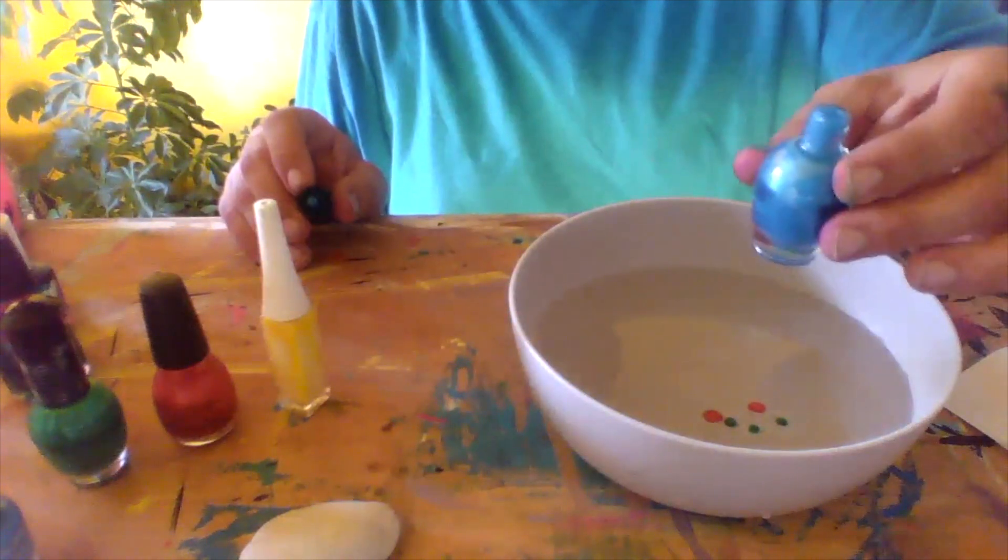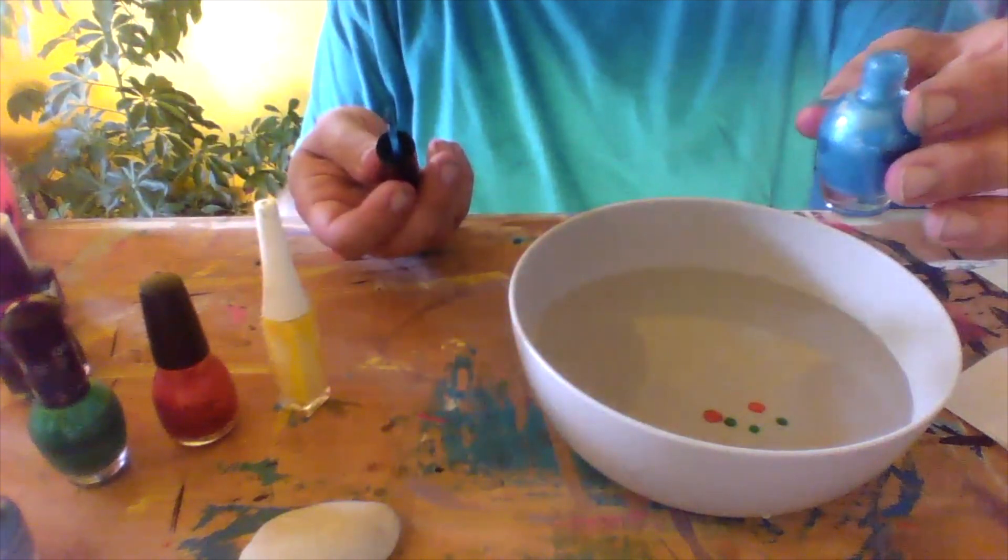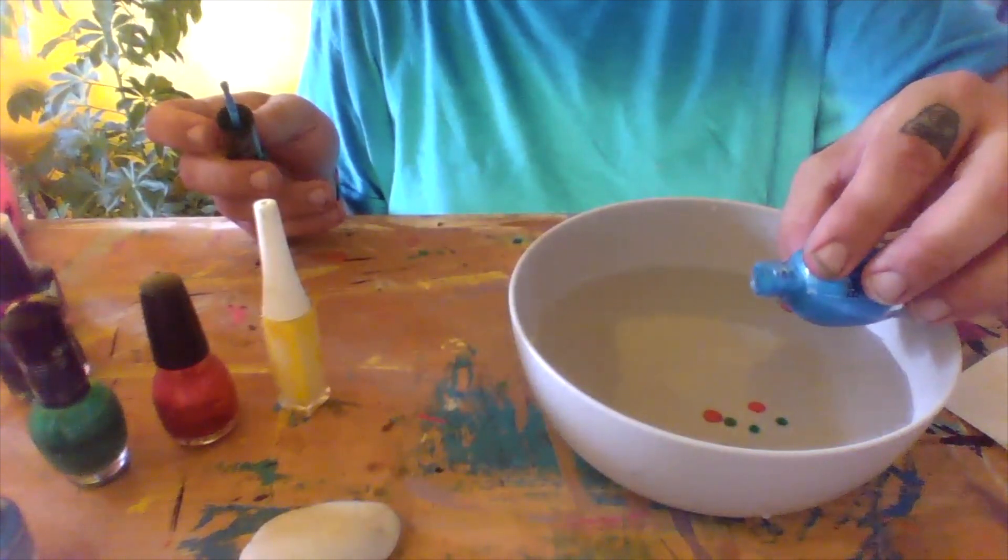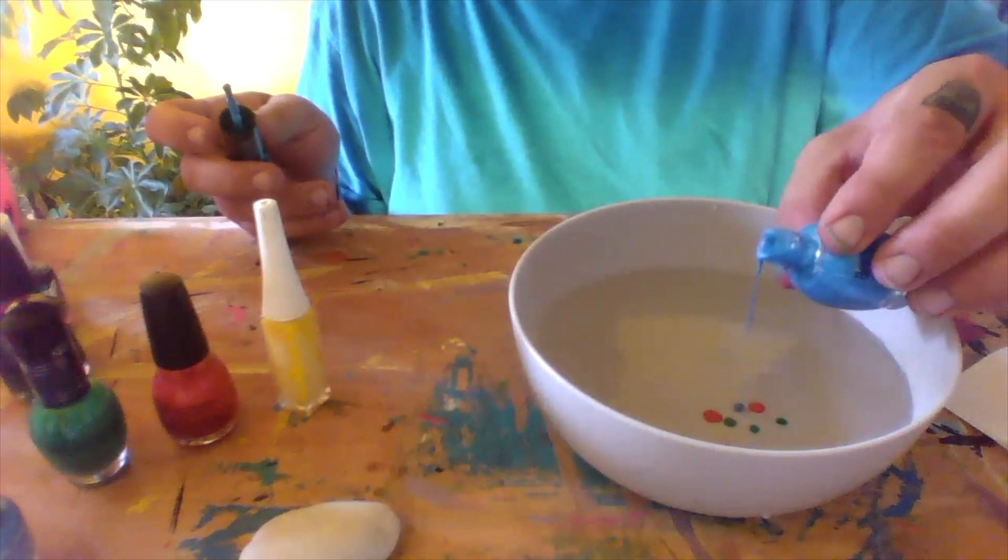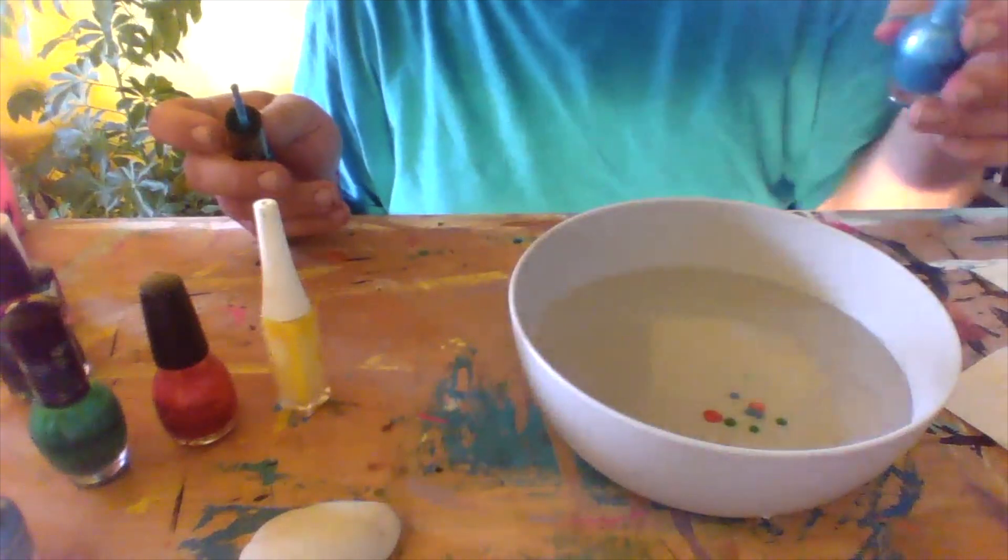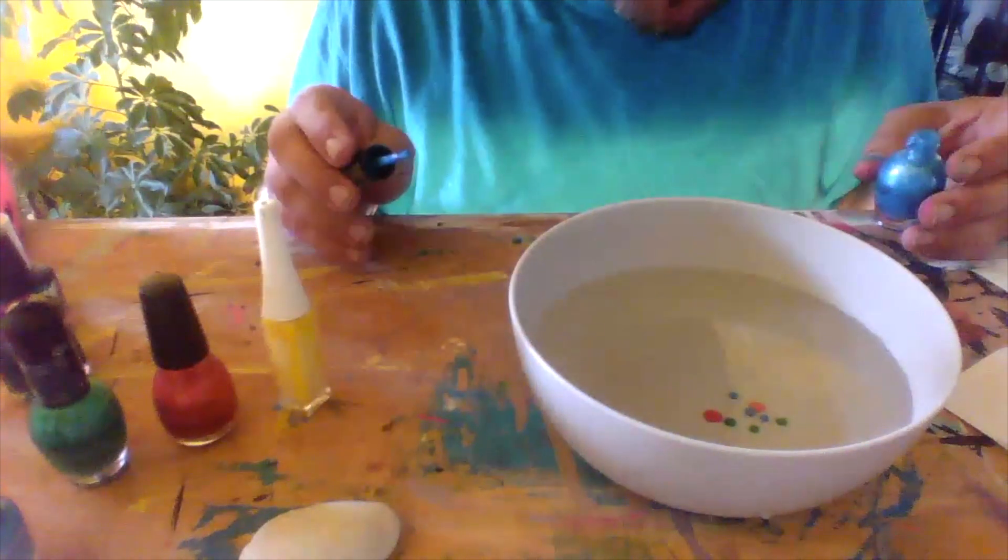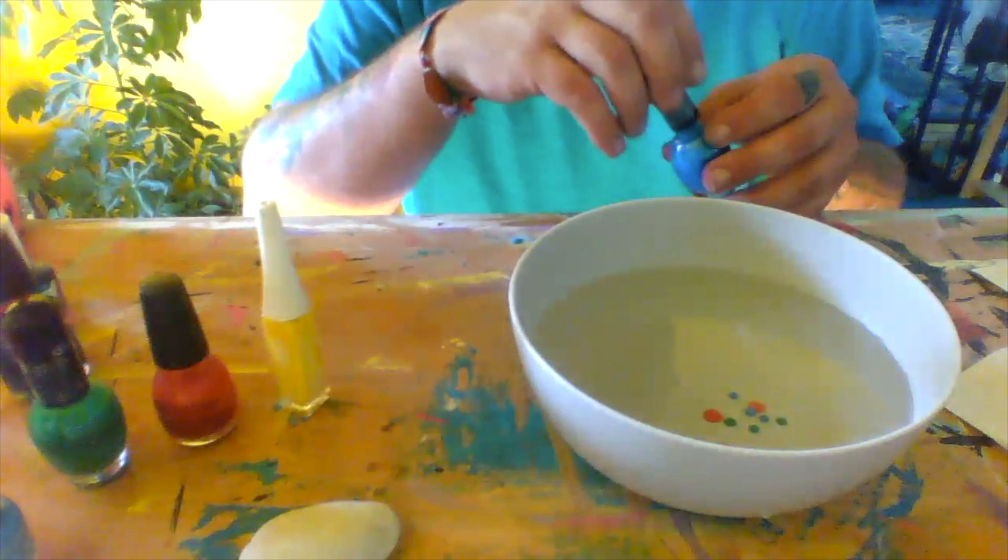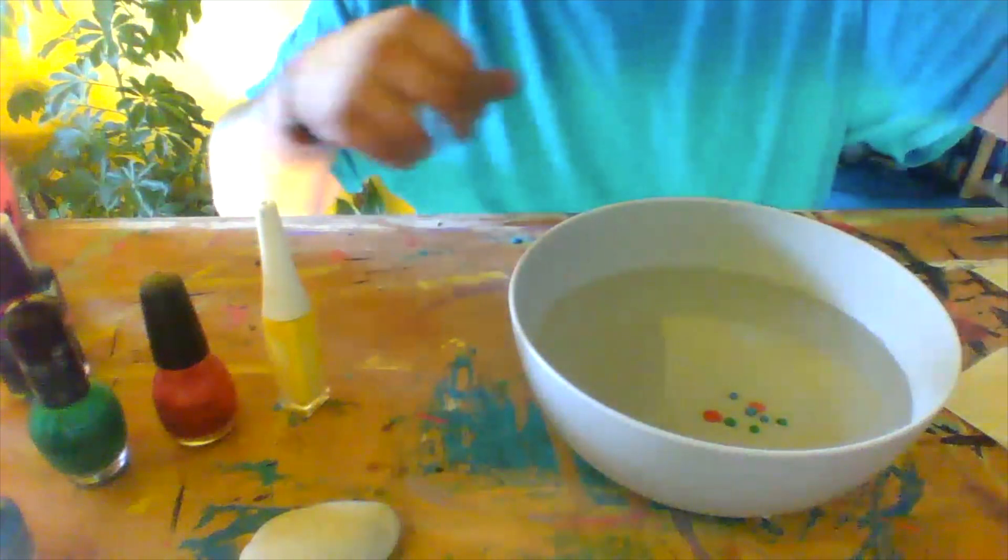So all you're going to do, take your nail polish, take the brush part out, and then just carefully pour a few drops into your bowl. That one just sank to the bottom. That's not supposed to happen. So we'll try a different color.